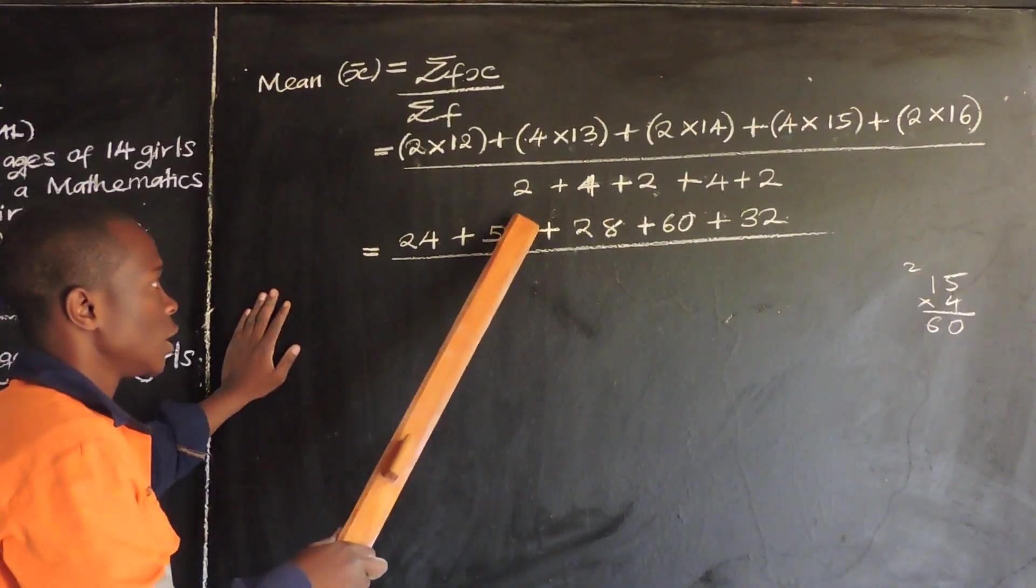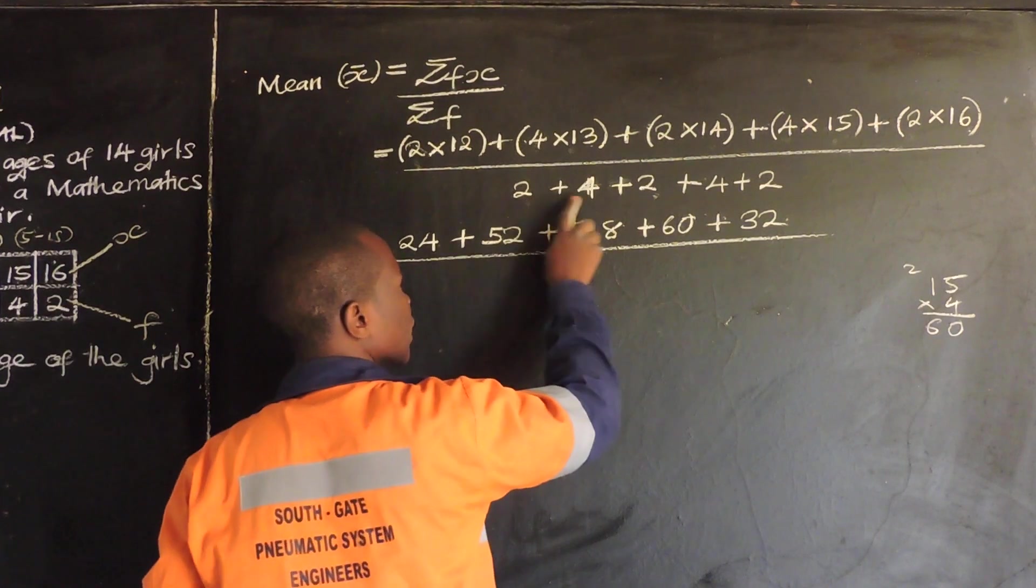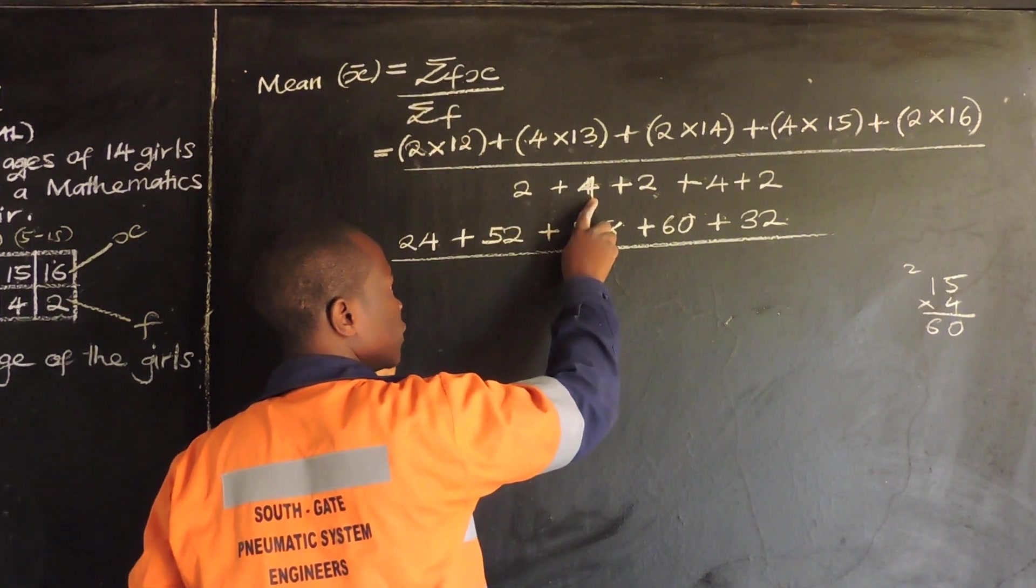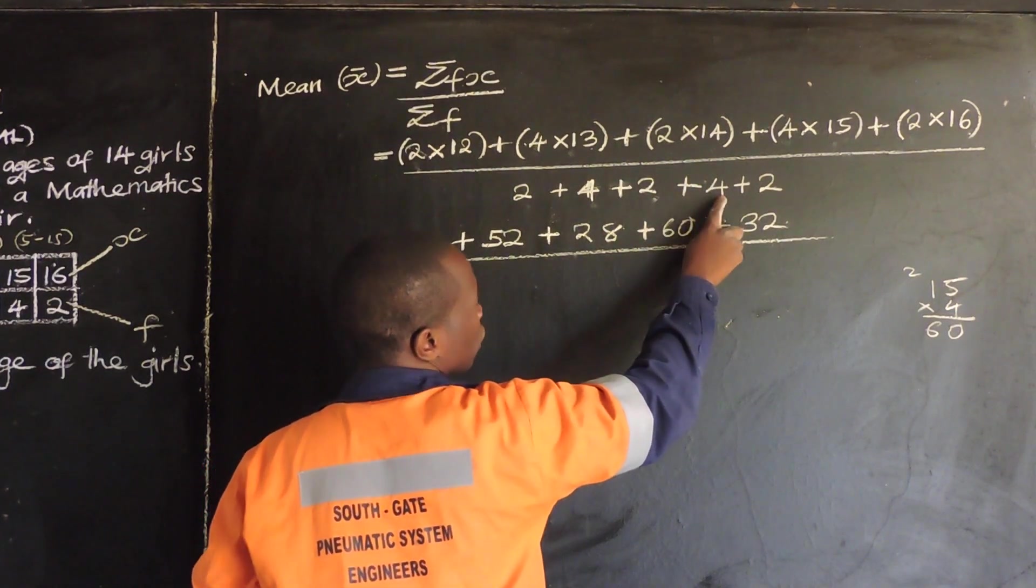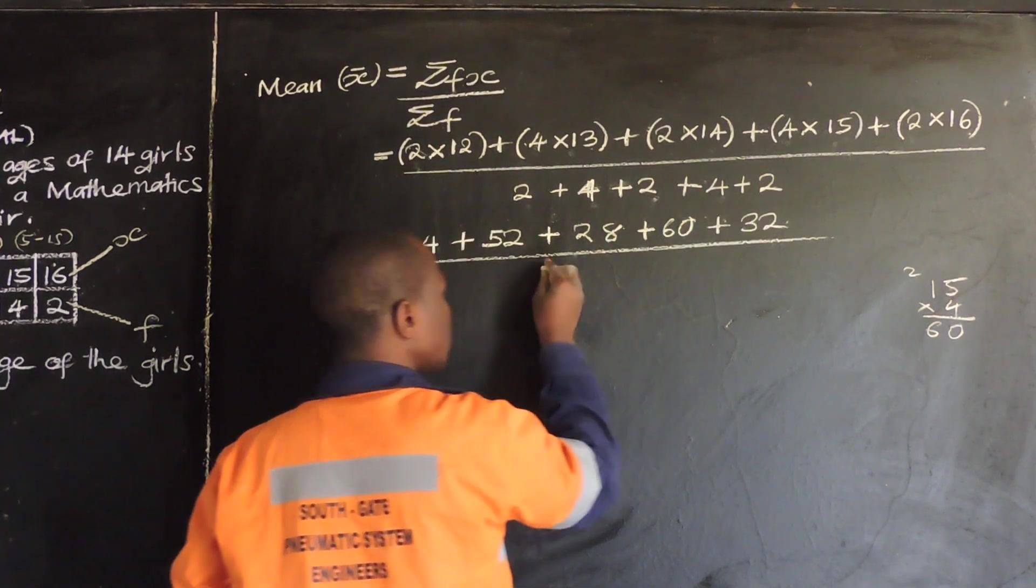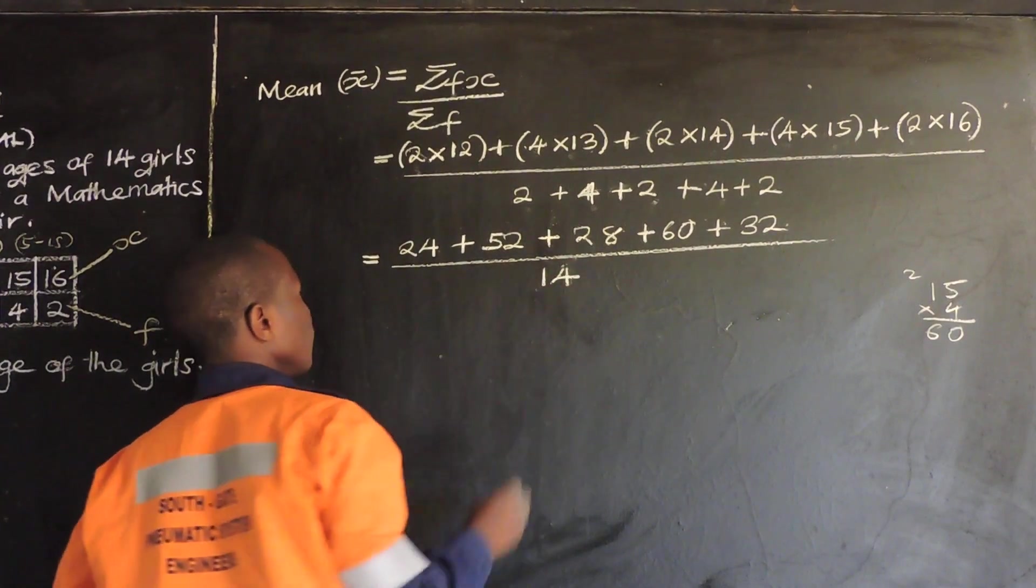You just add the total frequency. So, 2 plus 4, 6. 6 plus 2, 8. 8 plus 4, 12. 12 plus 2, get 14.